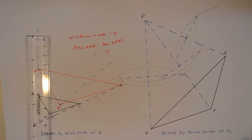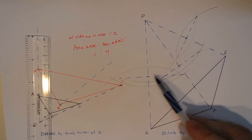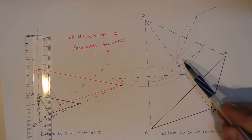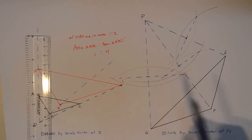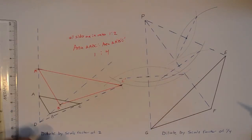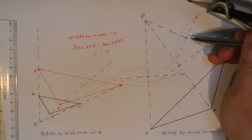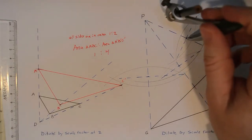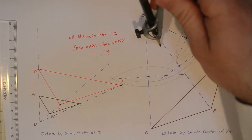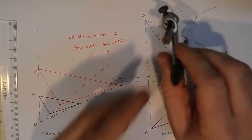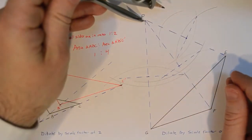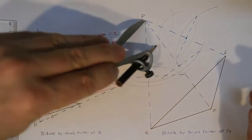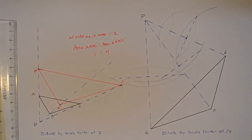If I was doing a dilation by scale factor one-half, I would stop here - E prime, F prime, and G prime would be those midpoints. But since I want a scale factor of one-quarter, I have to cut everything in half again. I'll repeat the perpendicular bisector process from P to each midpoint: place the compass on one endpoint, open it more than halfway, and do another perpendicular bisector construction.